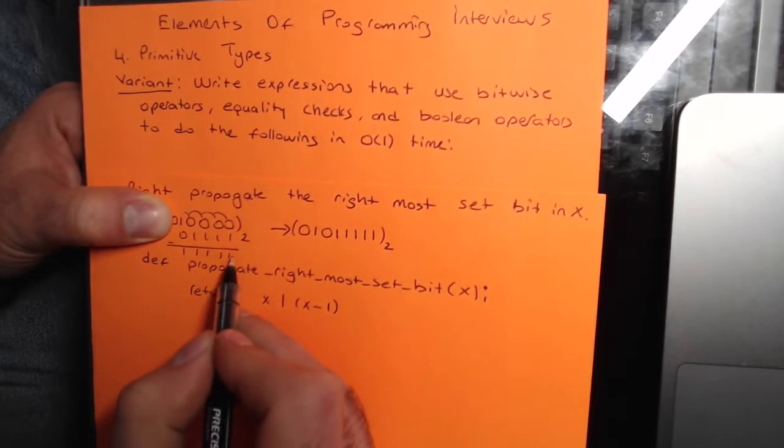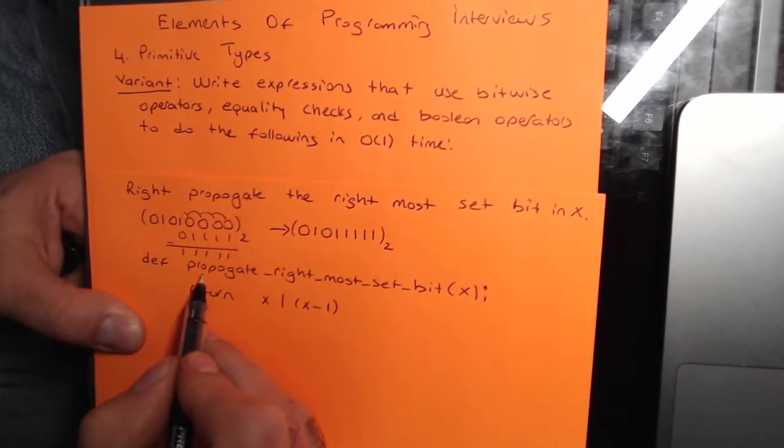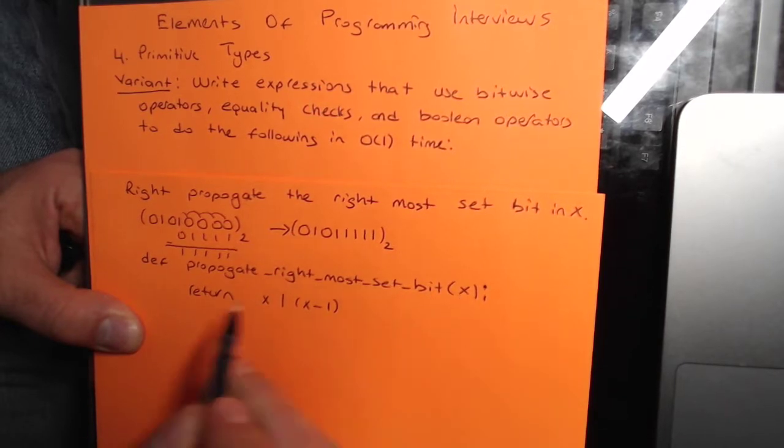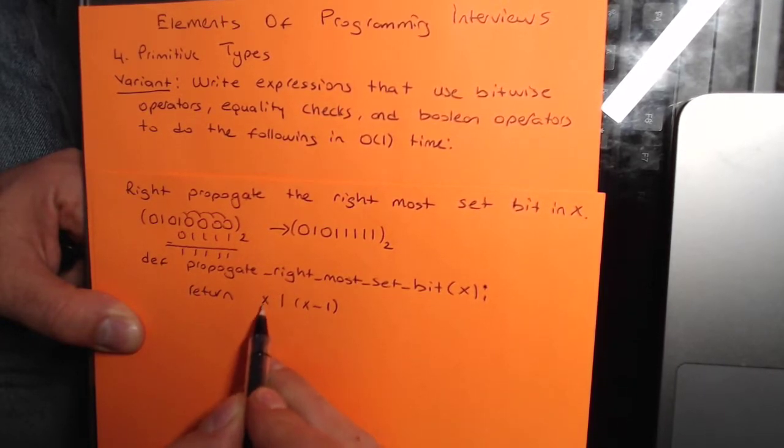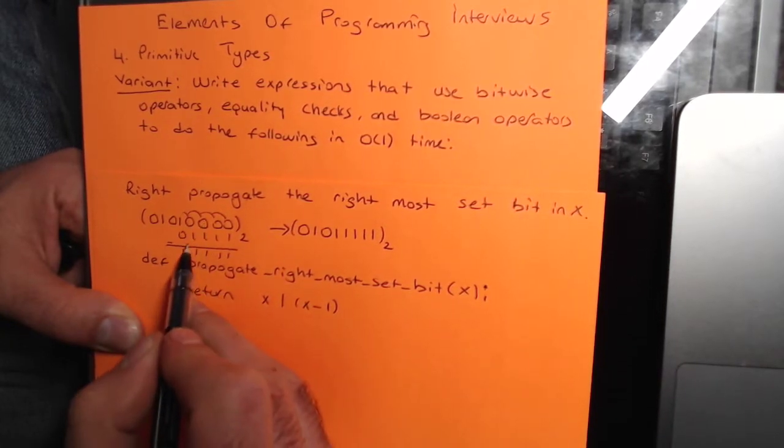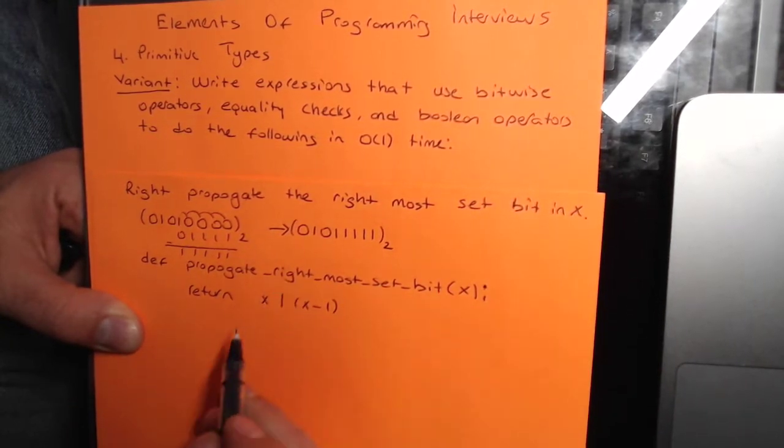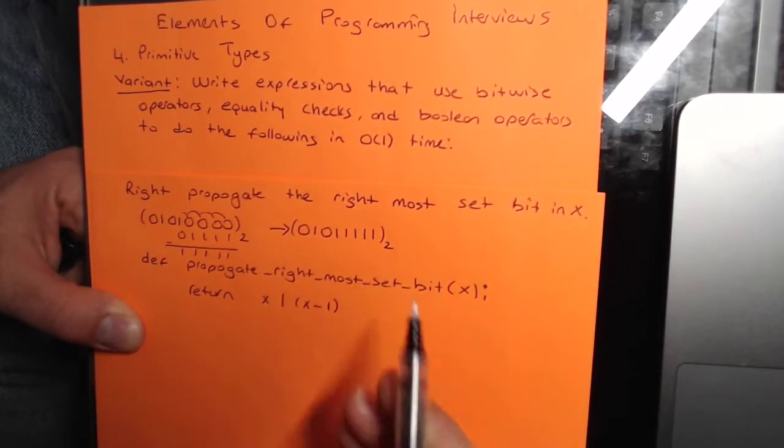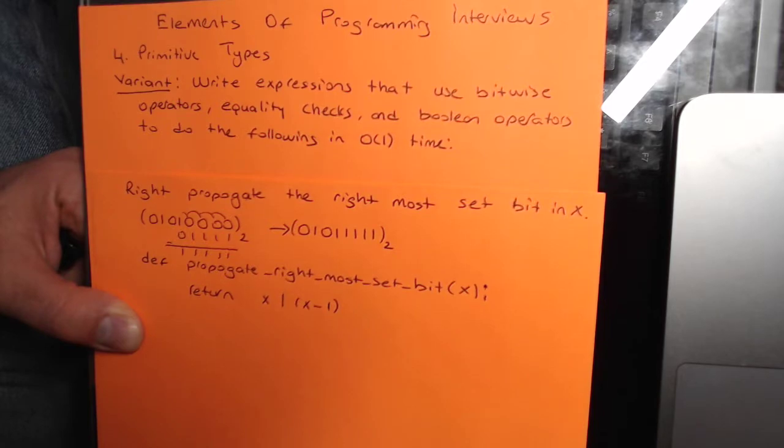So the answer is pretty straightforward. Here is a function definition, propagate rightmost set bit, which takes an integer. It subtracts 1 from it and XOR it—I'm sorry, it ORs it with itself. So basically, we subtract 1, OR it, and then you'll get that rightmost set bit will propagate to the rest of the digits on the right. That's pretty much it.